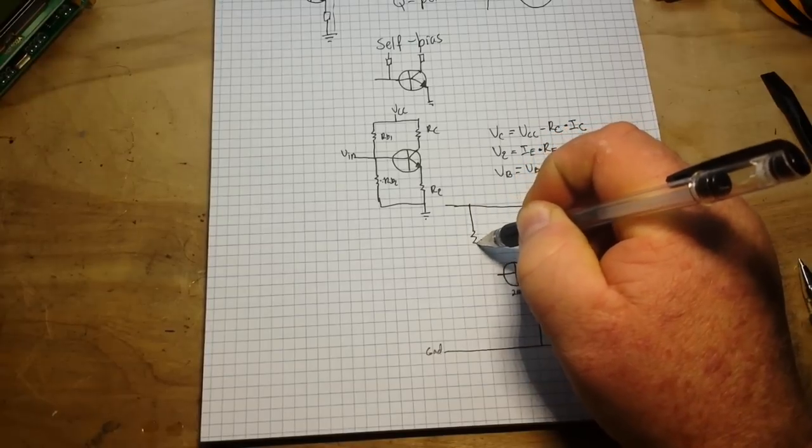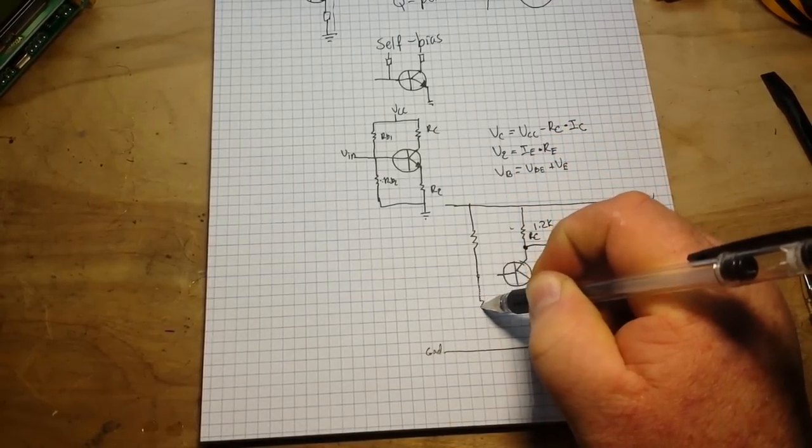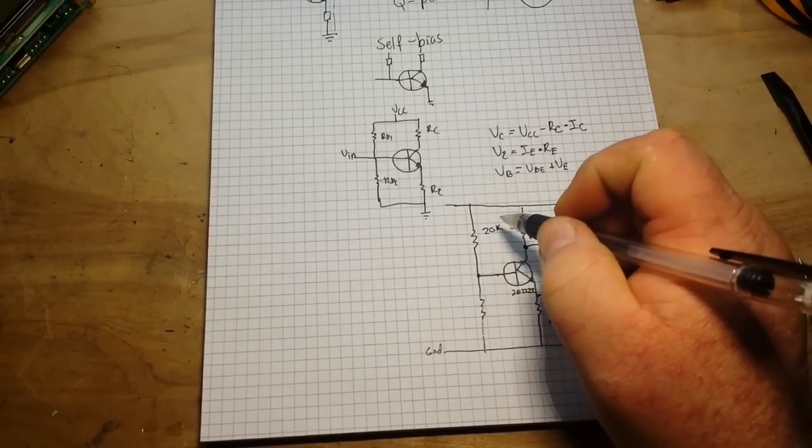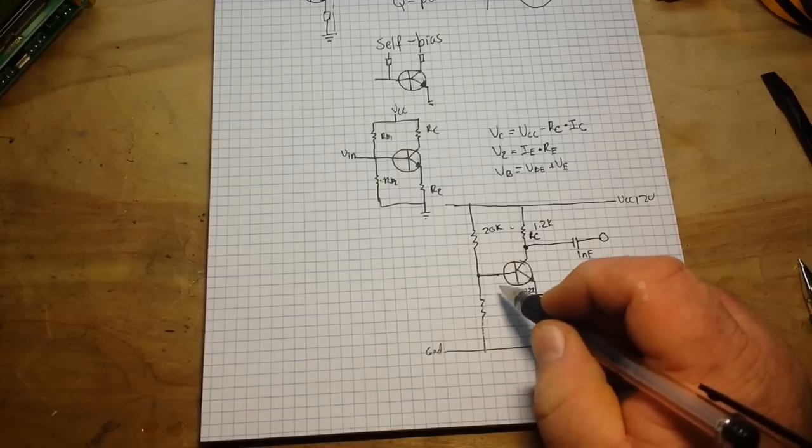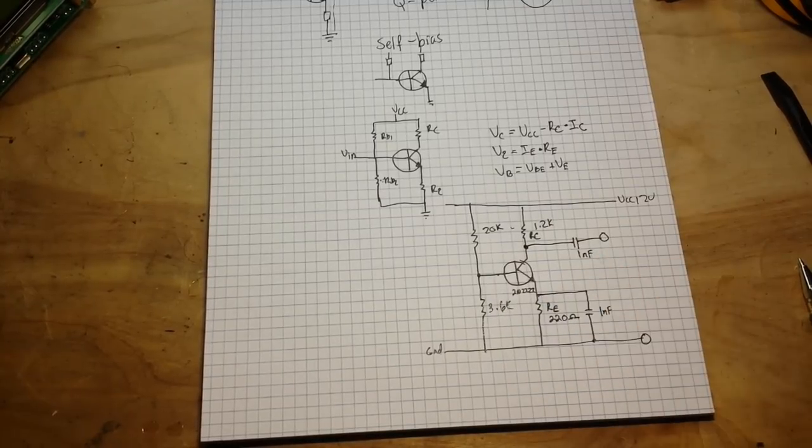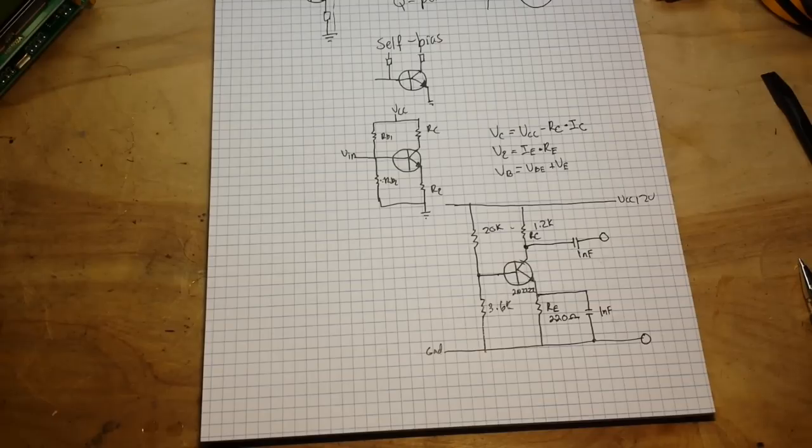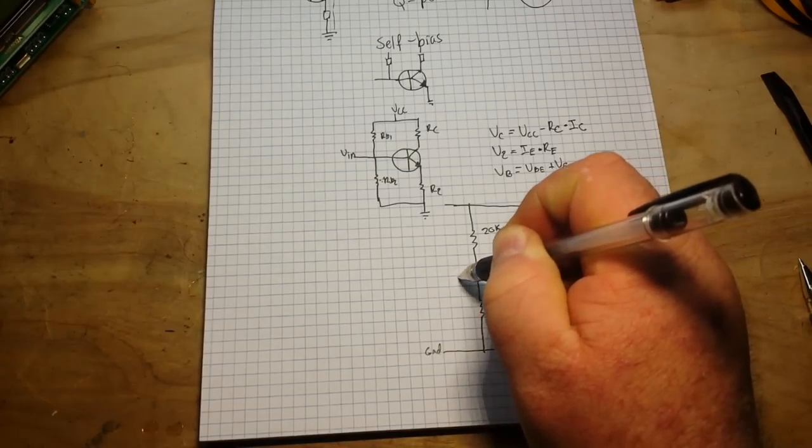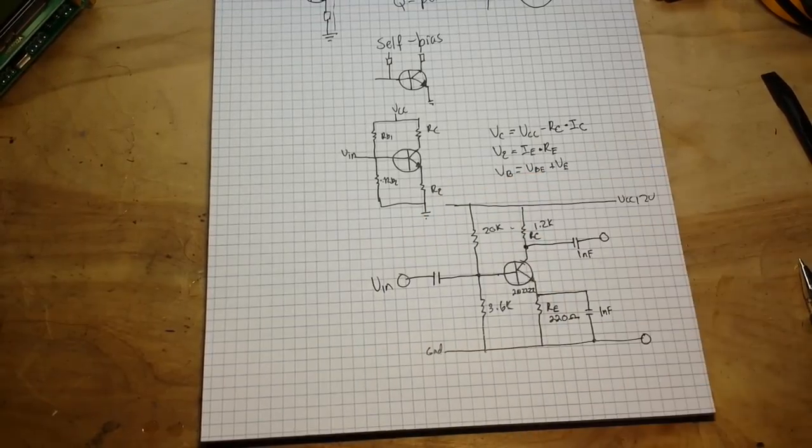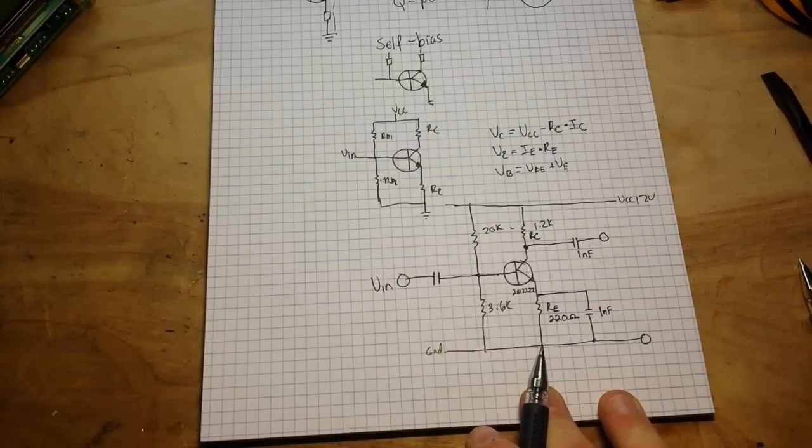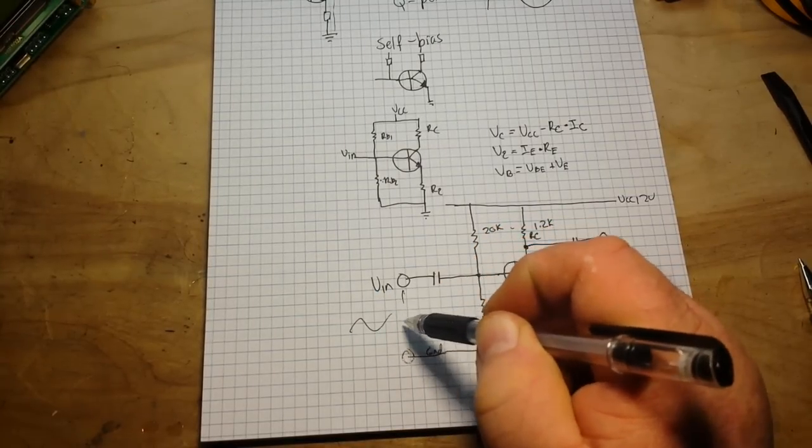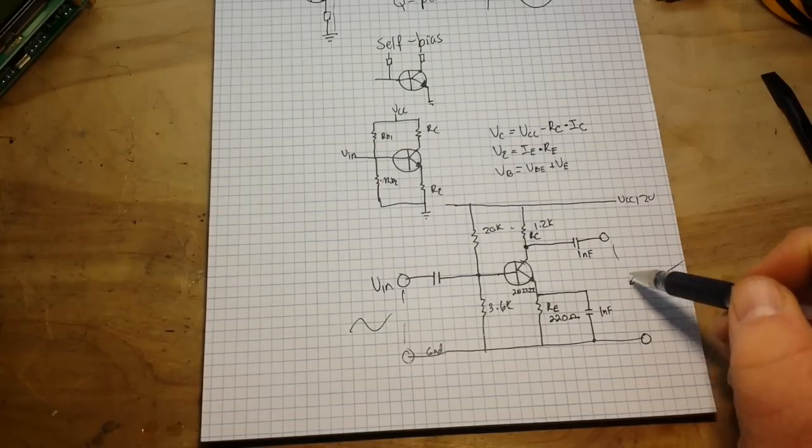So we already said we're going to do a voltage divider bias here. And we'll use something like 20K and 3.8, 3.6, one of those two will do it somewhere in that area. That will give us a nice bias. And then we're going to decouple on our input as well. So what we have here now is a common emitter amplifier. Our signal in will go between here, and our signal out will go between here.